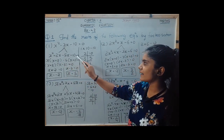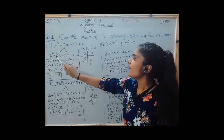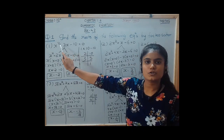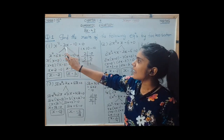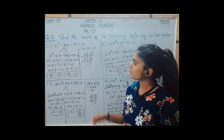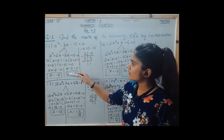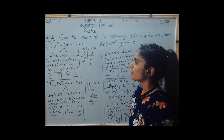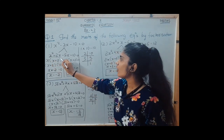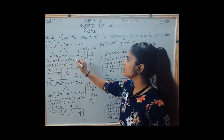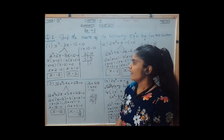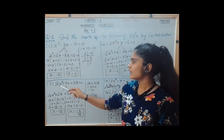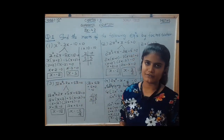The four-term equation becomes x squared plus 2x minus 5x minus 10. Since 2x minus 5x equals minus 3x, it is correct. Simplifying by pairing two terms each and taking common factors, we get the roots of x as minus 2 and 5.